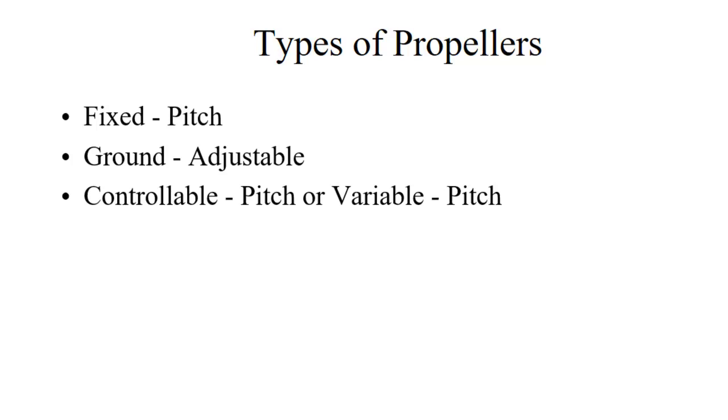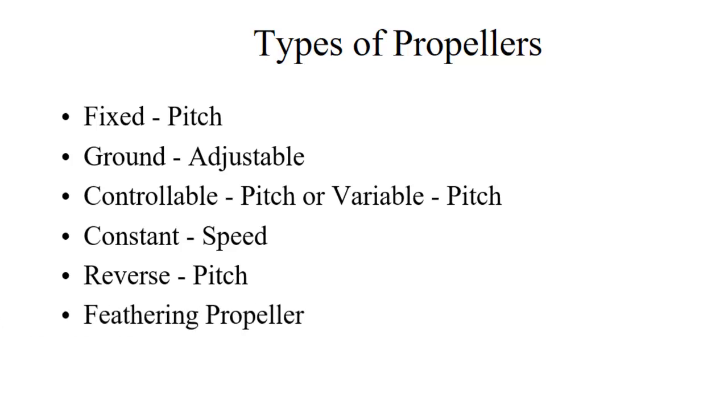There's controllable pitch or variable pitch propellers. And these you actually have a direct control over what the pitch is of the propeller. You're unlikely to encounter one of those. I have flown one, but it's unlikely that you're going to encounter one. Constant speed is a very common one. And it allows the pilot to set an RPM, and then the governor adjusts the pitch as necessary in order to maintain that RPM. And then there's reverse pitch propellers that allow you to actually change the pitch of the propeller to the point where you're thrusting, you're pushing air forward and thrusting aft. And then there's feathering propellers that allow you to increase the pitch until it aligns with the slipstream so that the engine stops turning. We'll talk about that in the next video.